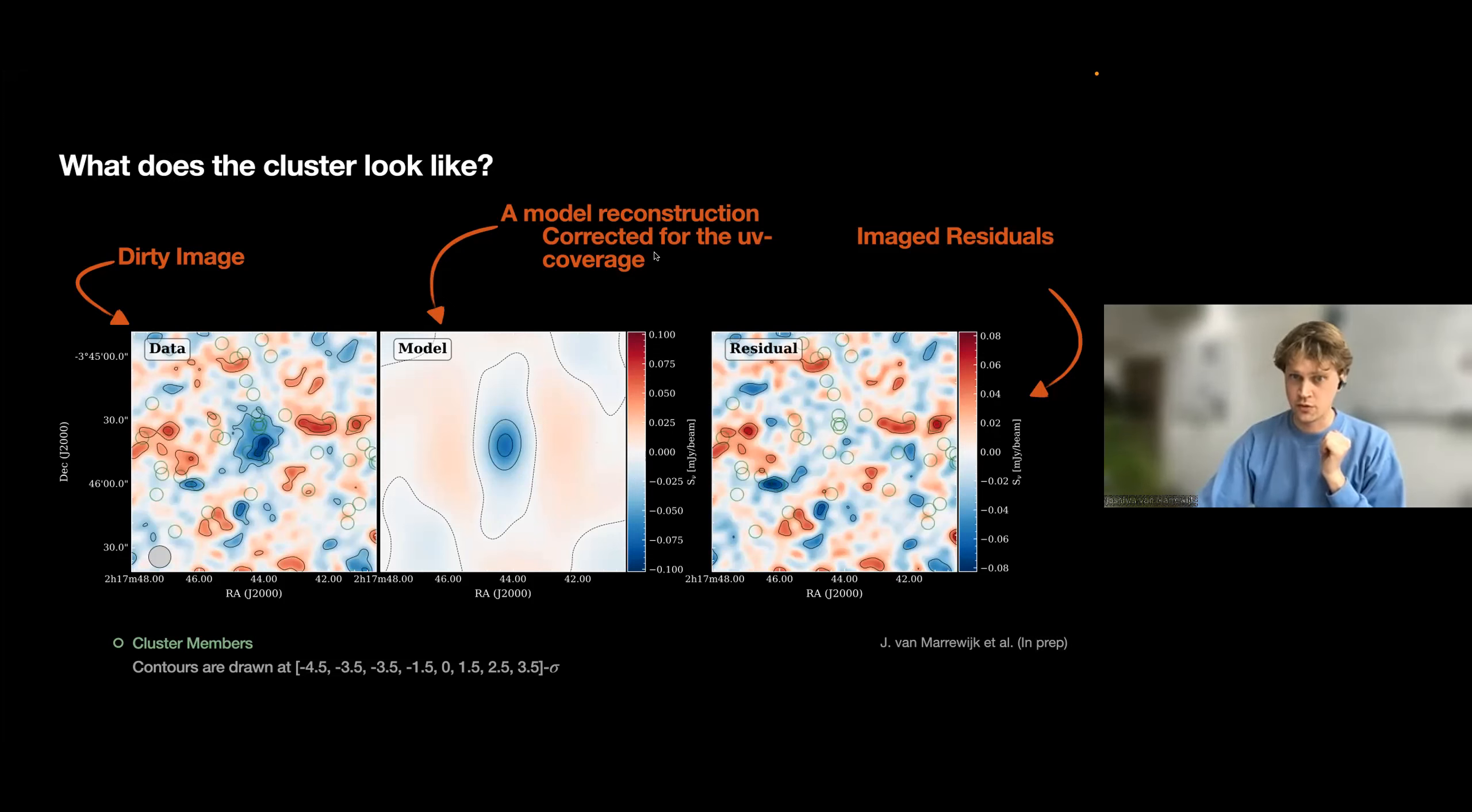This image is also corrected for the UV coverage of the ALMA-ACA observations. And then if you see in the residuals, you can see that the central part of this cluster is gone, and most of the side lobes are also gone.